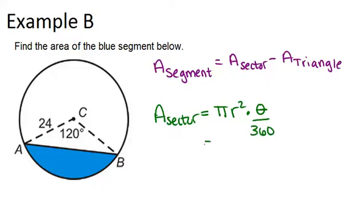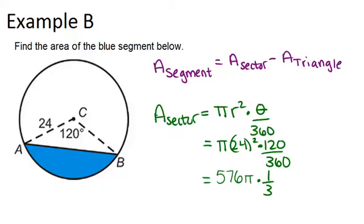So, our radius in this case is 24, and our central angle is 120 degrees. So, I want to do 24 squared, and then I can also reduce 120 over 360 to 1 third. So, I get 576 pi times 1 third. So, that's like doing 576 divided by 3, which is 192 pi.